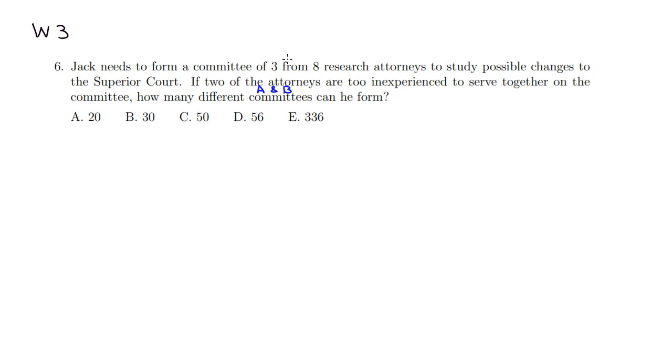All right, so there are two possibilities. We can have one of those inexperienced guys, so one of A and B. How many ways can we do this? So you have to choose one of them. I'm going to choose one of them, so they're either choose A or choose B. So there are two ways to pick A or B.